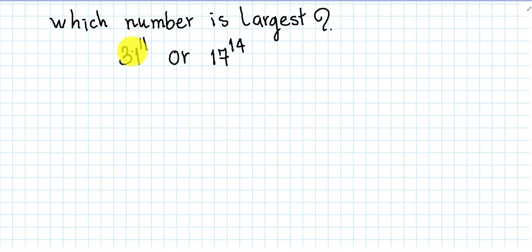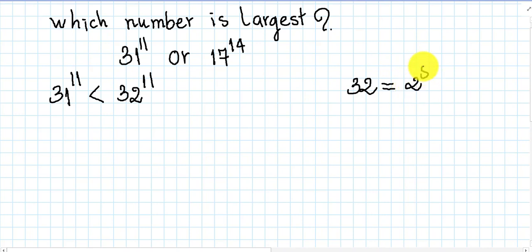First use 31 power 11. We know that 31 power 11 is smaller than 32 power 11. But 32 we can write equal to 2 power 5.